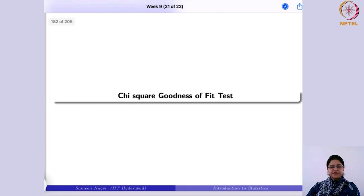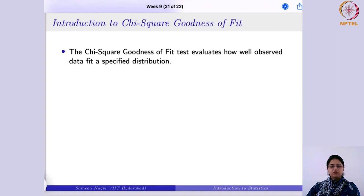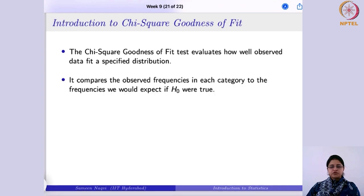The next test is the chi-square goodness of fit test. It tests whether the sample data is coming from a population with a specified distribution. It evaluates how well your observed data fit a specified distribution by comparing the observed distribution with the expected distribution to see if there is a significant difference between them.